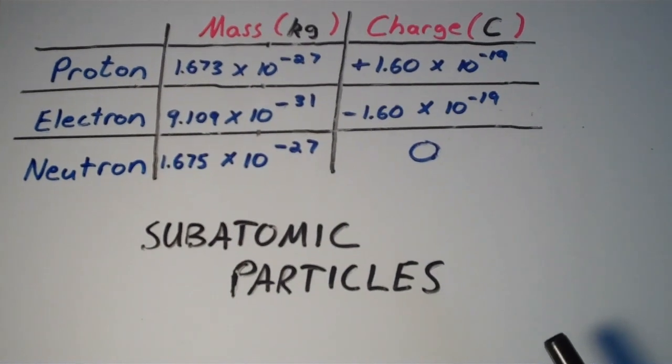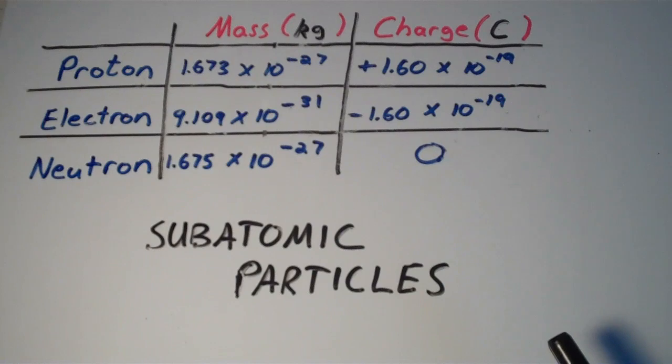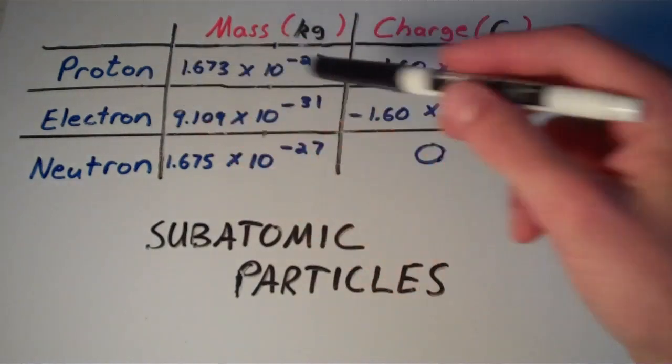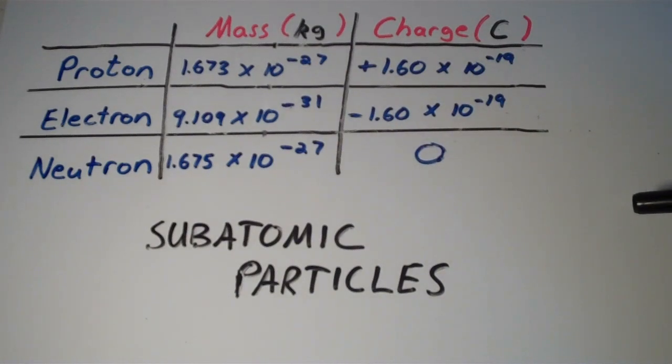So let's see if we can draw any conclusions from this table. A proton has a mass of 1.673 times 10 to the negative 27 kilograms, and a charge of positive 1.60 times 10 to the negative 19 coulombs. Notice that the electron has the same charge as a proton, but opposite in magnitude. The charge of the electron is negative 1.60 times 10 to the negative 19, just like the proton, but negative.